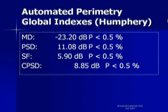This slide shows the global indices as it is written in a Humphrey report or Humphrey test. In this example, the mean defect is minus 23.2 decibels. This means that the generalized depression is severe.